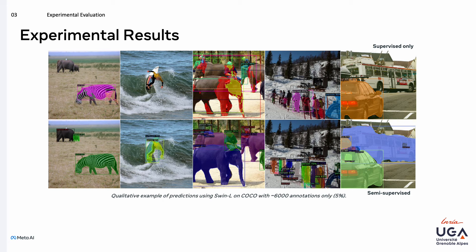Here we can see examples of the predictions of the Mask2Former model with a ResNet-50 backbone on COCO when using only 5% of annotations, which corresponds to about 6000 annotated images. The quality of predictions given by the model trained with supervised data only, shown in the upper row, is bad and prone to many errors. In contrast, the model trained using our semi-supervised method, illustrated in the second row, yields much better predictions.